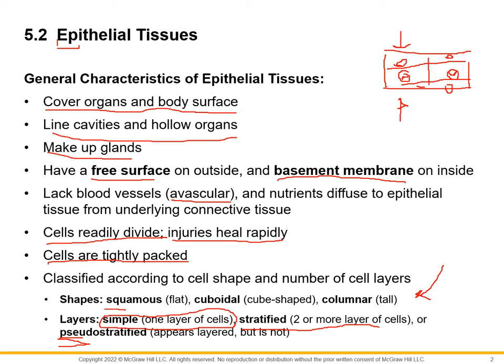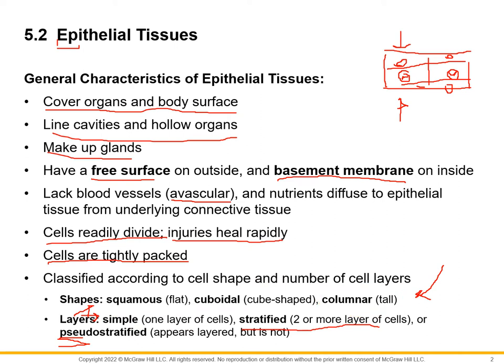The next word in the name describes the shape of the cell. Squamous means flat. Cuboidal means cube-like — it doesn't mean it's a cube, just roughly as wide as it is tall. Columnar means very tall. So one cell layer thick of flattened cells is simple squamous; more than one layer of flattened cells is stratified squamous. One cell layer thick of cube-like cells is simple cuboidal; multiple layers is stratified cuboidal — and so on.